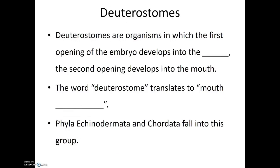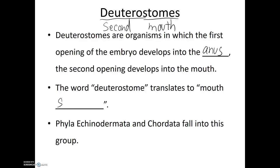Deuterostomes, on the other hand, are organisms in which the first opening of the embryo develops into the anus. Deutero means second, and 'stome' again refers to mouth, so the word deuterostome literally translates into 'mouth second.' Phylum Echinodermata and phylum Chordata fall into this group, and we, as vertebrates, are in phylum Chordata.